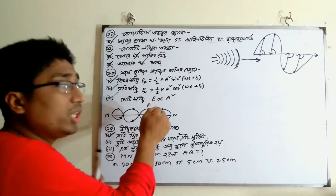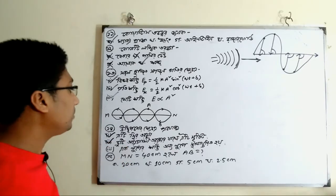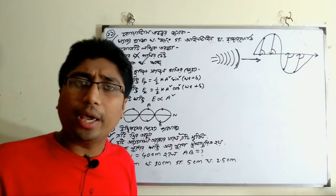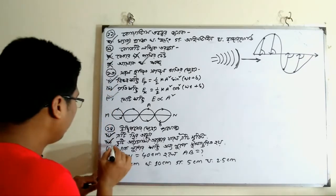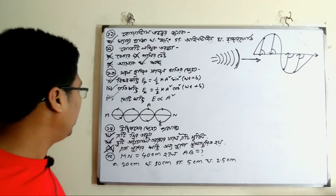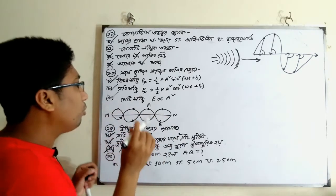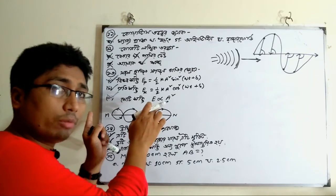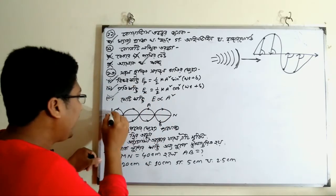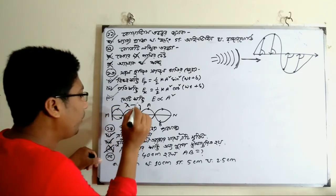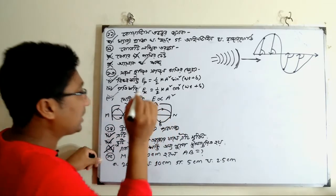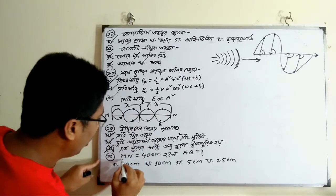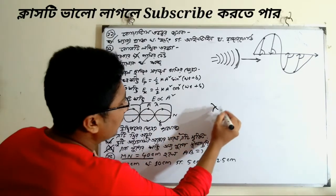Two progressive waves travel in the same direction and overlap. In one loop, the wavelength and position are discussed — how does lambda come about when these waves combine in a loop?